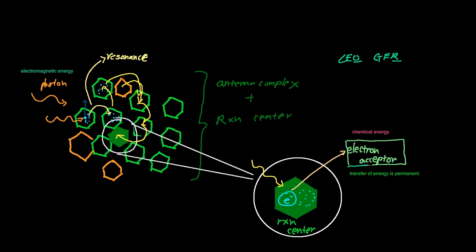Now that we have a good understanding of this, we can go into what photosystems 1 and photosystems 2 are — the two photosystems that make photosynthesis possible.